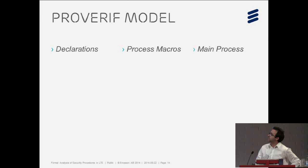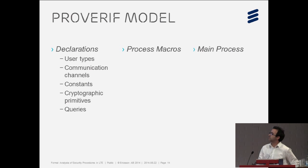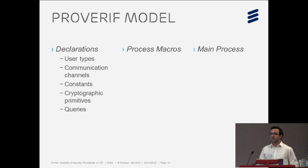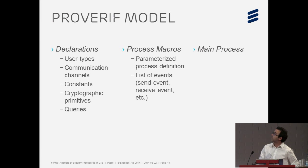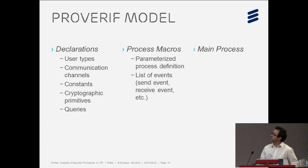A ProVerif input model can be divided into three parts. In the declaration part, you find things related to user types, communication channels, constants, cryptographic primitives, queries, etc. Then you have the process macro part, where each process macro is a parameterized process definition defined by a list of events.